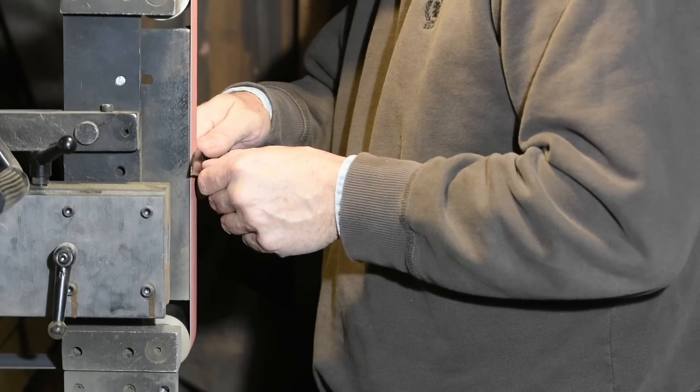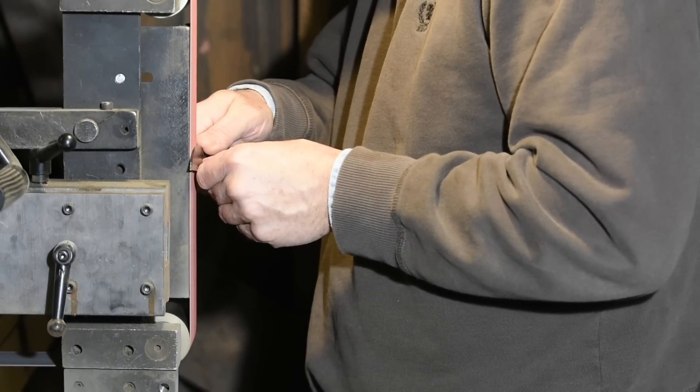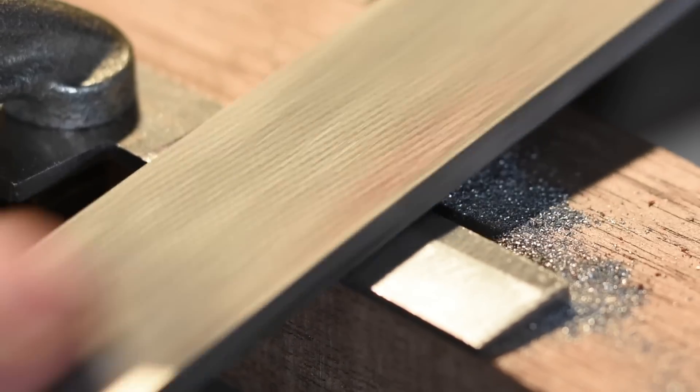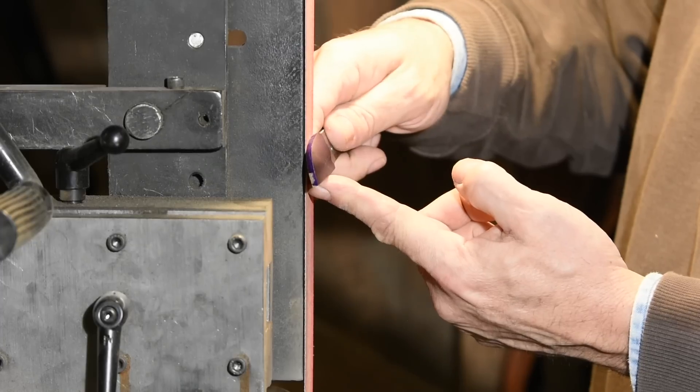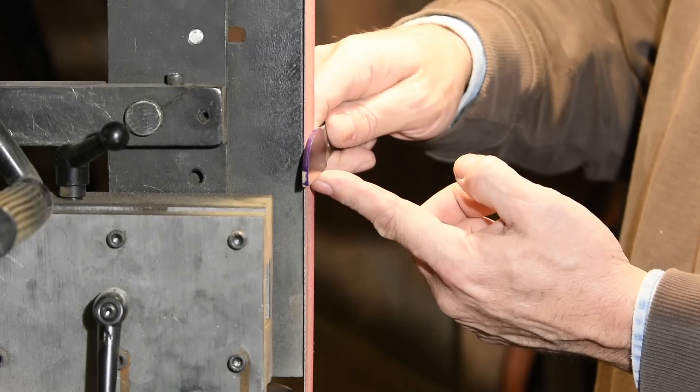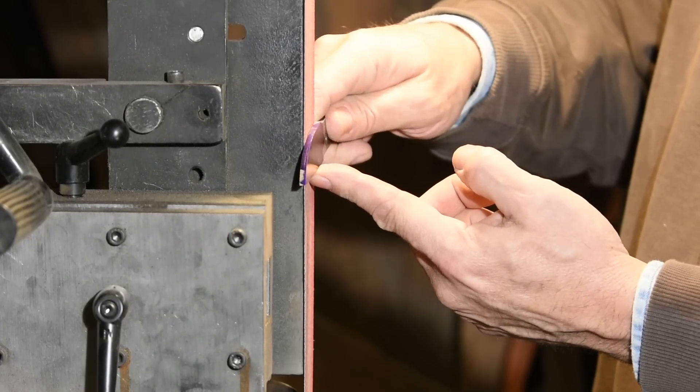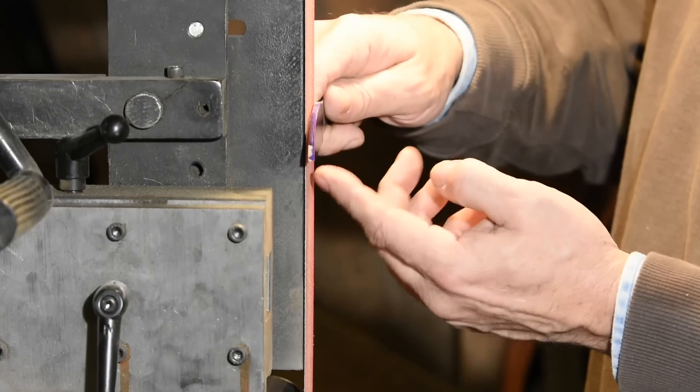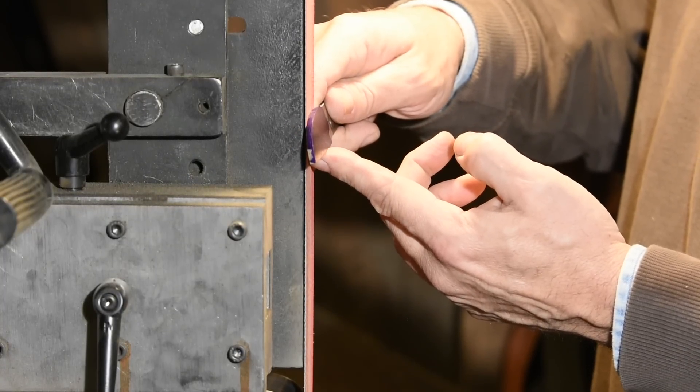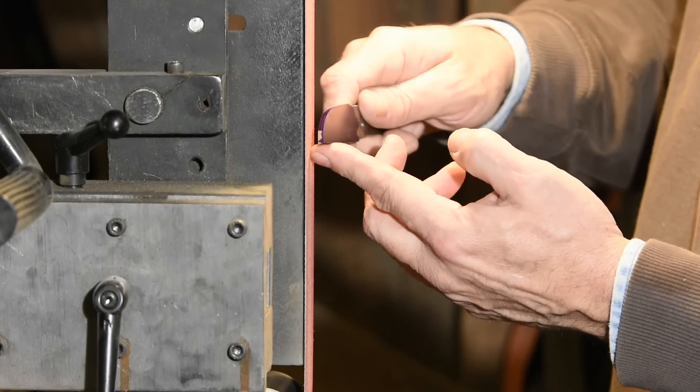Now, at this point, if you're doing it for the first time, you might want to use a file to file this bevel. I'll be using a belt grinder, but the principle's exactly the same. I just want to start cutting this angle. I'm maintaining that same angle against the platen. If I start cutting too much towards the edge, I rock back this way. If it's too shallow, I adjust the other way.